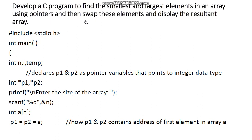The question says to display the result in the array. Let us take the question sentence by sentence. The first sentence says you need to develop a C program to find the smallest and largest elements in an array using pointers. To do this, you have to read an array, assign two pointers to the array, and then traverse the array to find the smallest and largest elements using a for loop and if statements. The second sentence says we need to swap the smallest and largest elements pointed to by the pointers, and finally display the resultant array.